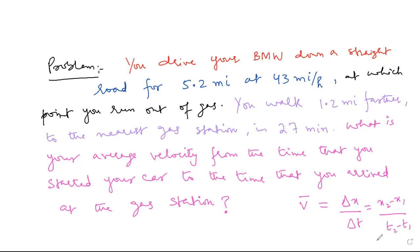So let us move to solve it. As you can see, the problem has two parts. First you drive your BMW for this much distance at this much speed, and in the second part of walking you move 1.2 miles in 27 minutes. So the total displacement is evident. In the second portion of your journey the time is given, but in the first portion you have to calculate the time in order to get the total time elapsed.